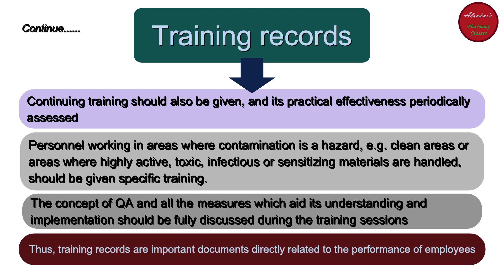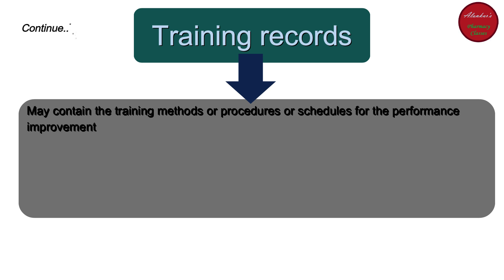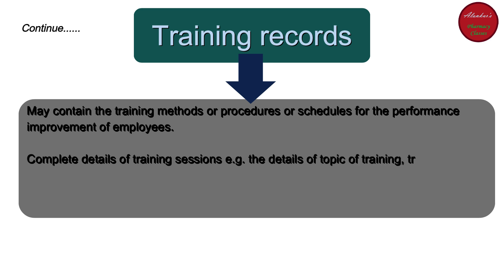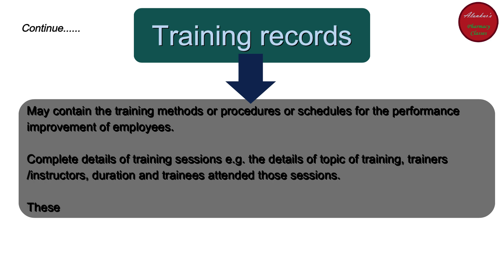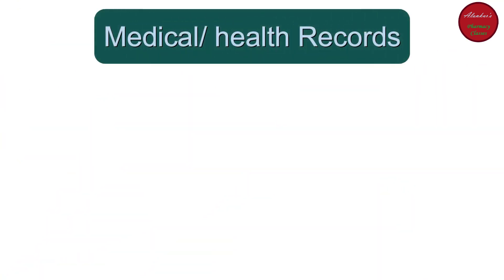Training records are one of the important documents directly related to the performance of employees. These records may contain training methods, procedures, or schedules for performance improvement. They include complete details of training sessions — topics covered, trainers or instructors, duration, and the trainees who attended. These records may also contain evidence of successful completion of training courses by employees.